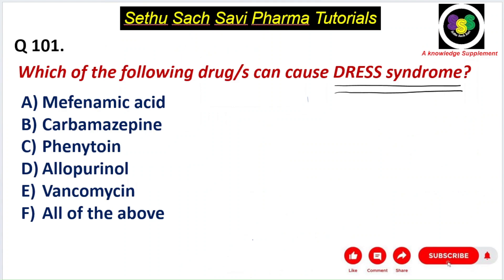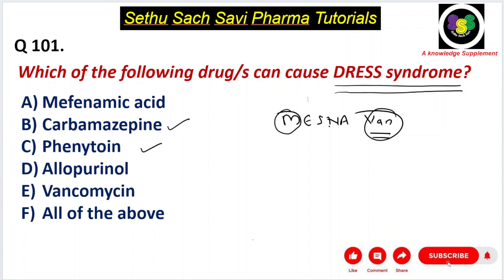Coming back to the question: which drug can cause DRESS syndrome? Using the mnemonic MESNA VAN — vancomycin, mefenamic acid, epilepsy drugs like carbamazepine and phenytoin, sulfonamides, nevirapine, and allopurinol — all the drugs listed in the choices can cause DRESS syndrome. So the correct answer is F: all of the above. Hope you understood this discussion. Keep watching, thank you.